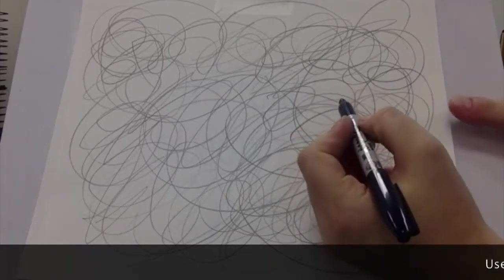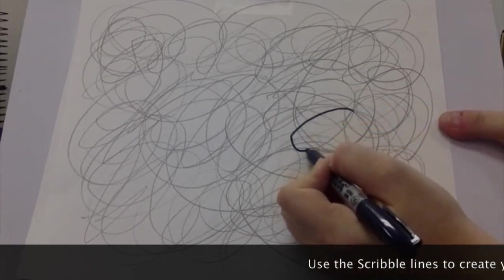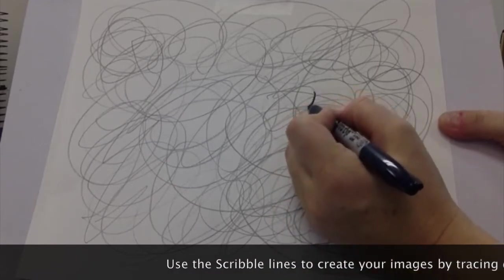So what I'm doing is I'm just looking and then I kind of demonstrate how I use the scribble lines to find things. I see something. I see this scribble line right here to me looks like an eye. And so does this one.